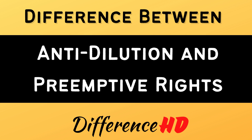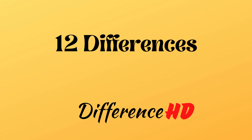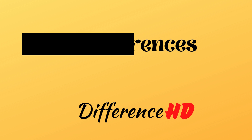Differences between anti-dilution and preemptive rights. Anti-dilution and preemptive rights are two important provisions often included in shareholder agreements and governing documents of companies. These provisions help protect the interests of existing shareholders when new shares are issued. While they serve a similar purpose of preserving shareholder value, there are distinct differences between them. In this video, I will outline 12 differences between these two provisions, providing a detailed explanation for each difference.